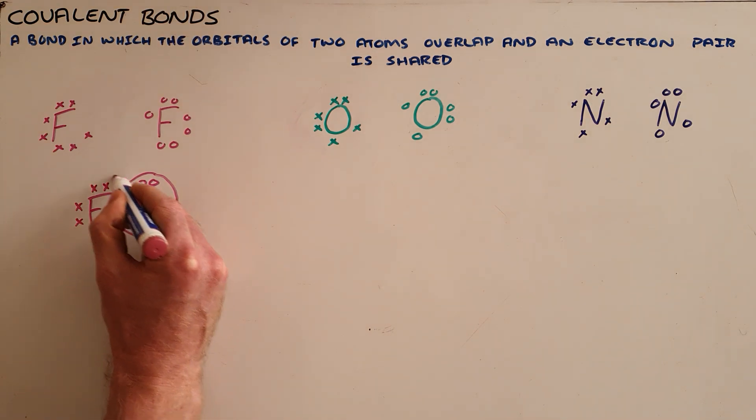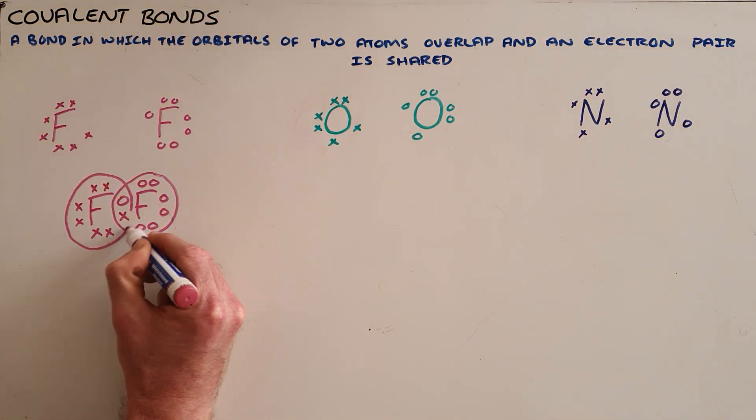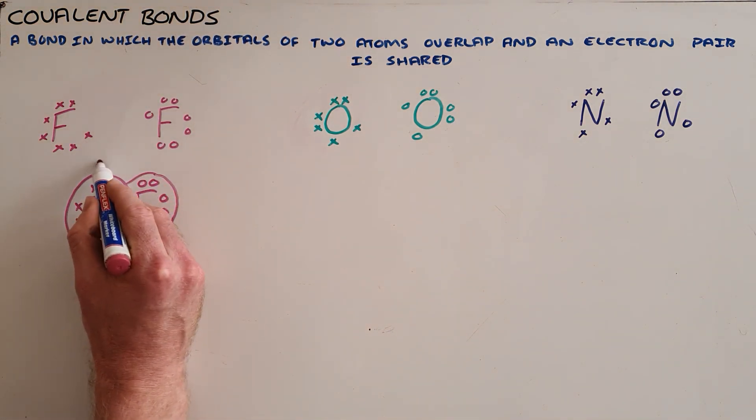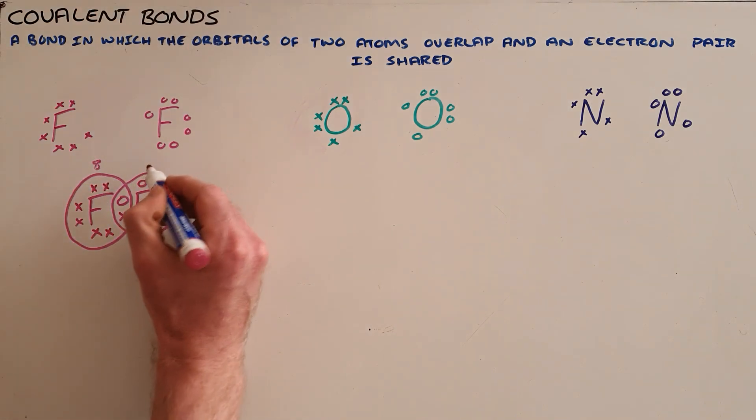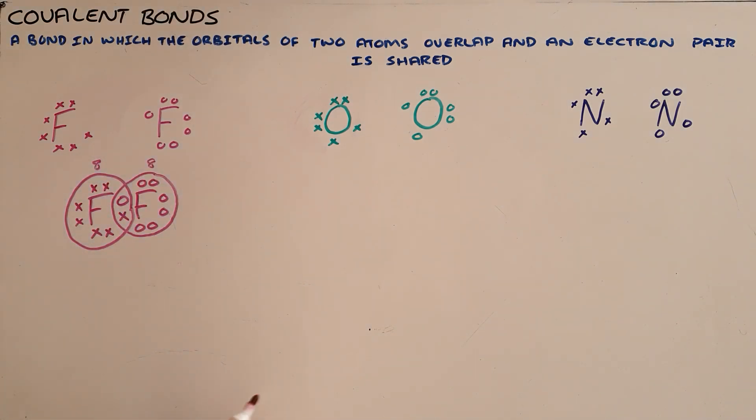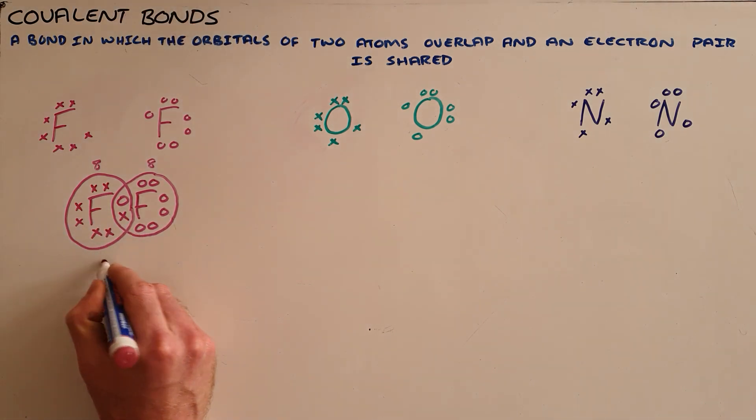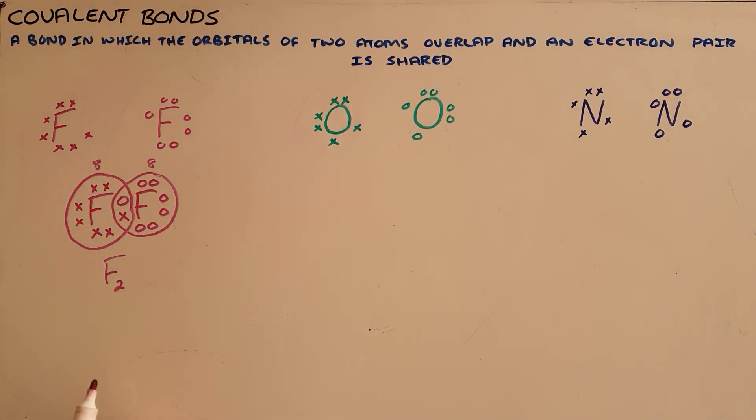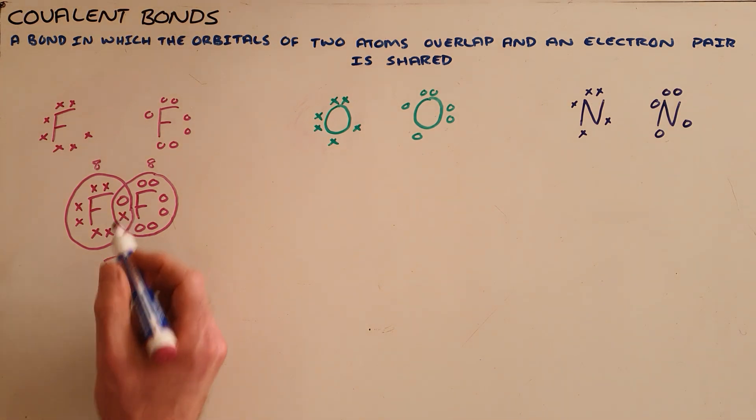Each fluorine atom is now surrounded by eight electrons and we say that eight electrons means that the valence shell is now full, or we say that the octet rule has been satisfied. And fluorine has now formed a covalent bond with itself in order to obtain a full valence shell and it now becomes more stable.